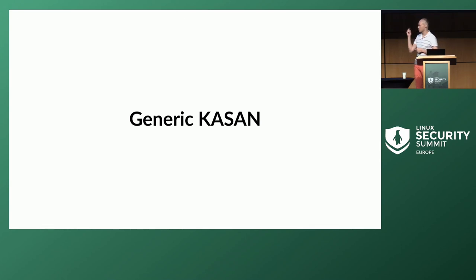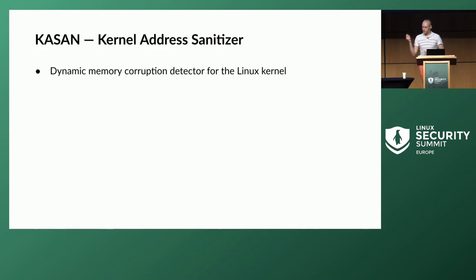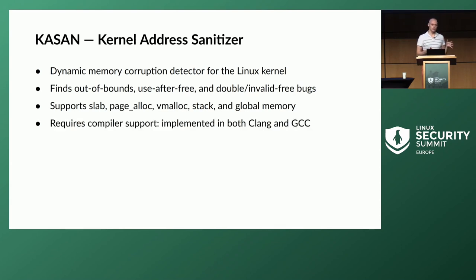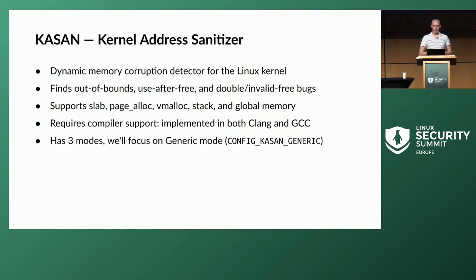KASAN stands for kernel address sanitizer, and it's a detector that finds memory corruption. In particular, it finds out-of-bounds, use-after-free, and invalid free bugs in slab, page alloc, and vmalloc, and also finds out-of-bounds bugs in stack and global memory. It covers quite a wide range of different memory corruptions. It does require compiler support, but the support was integrated into both Clang and GCC quite a few years ago, so there are usually no issues. It has three modes, but I'm going to focus on the generic one for now.